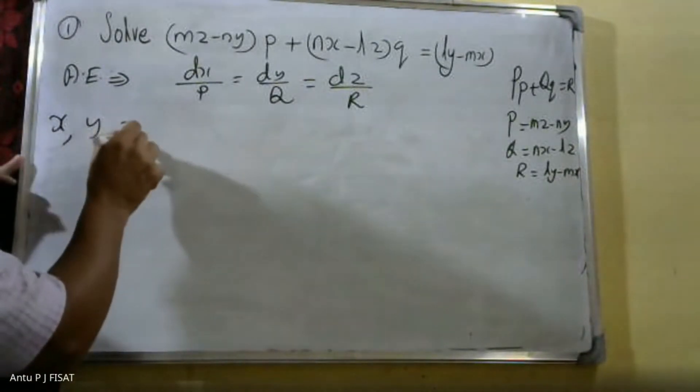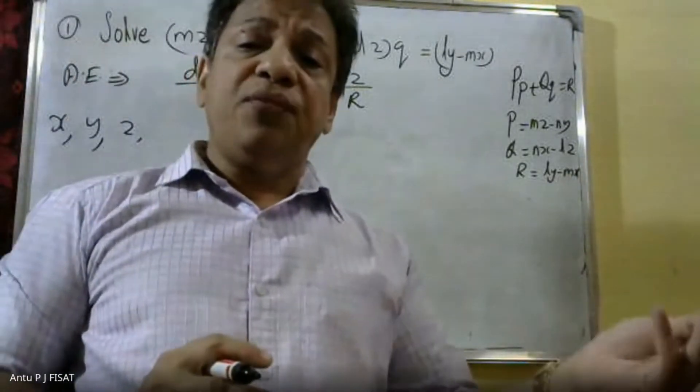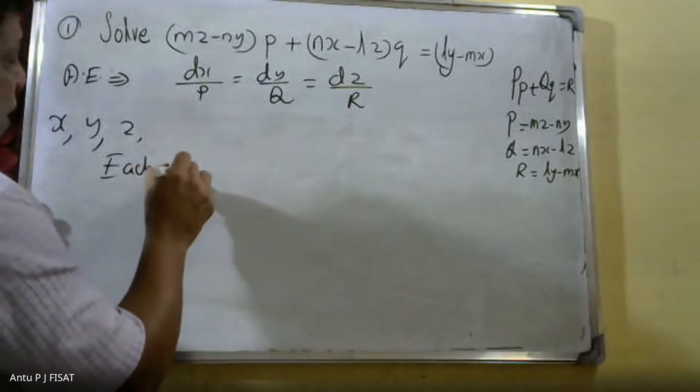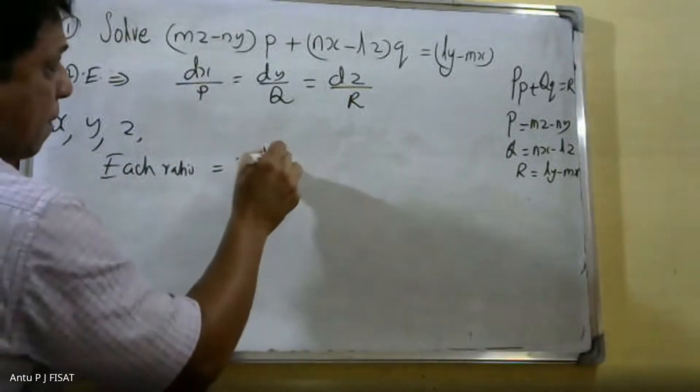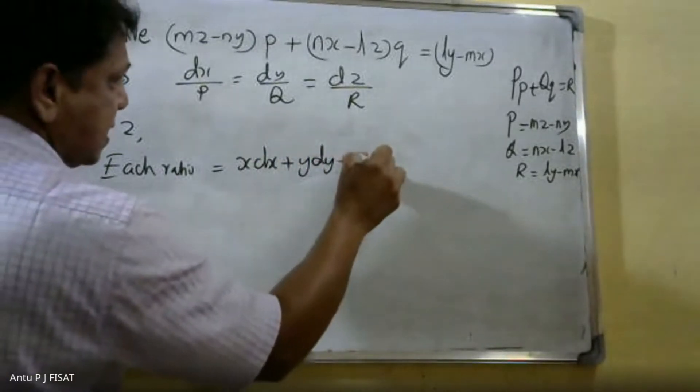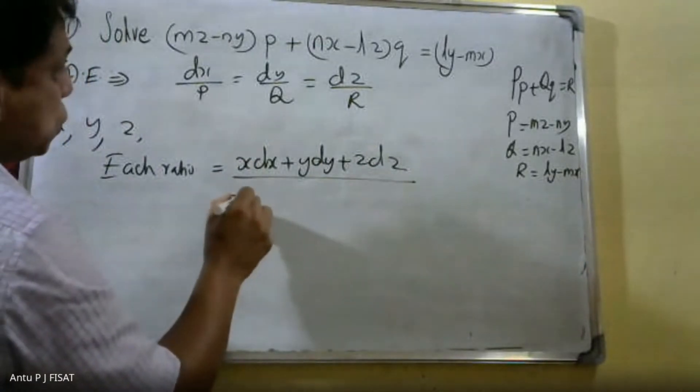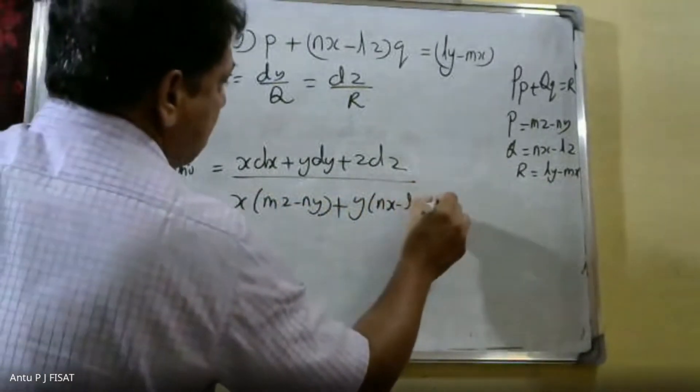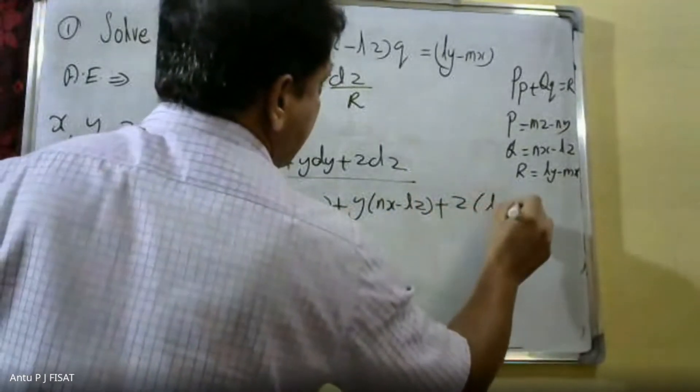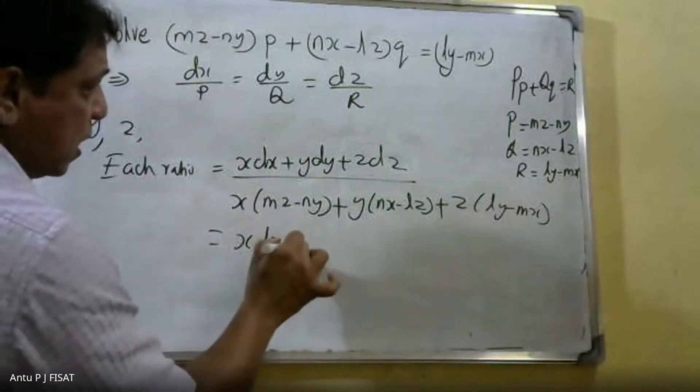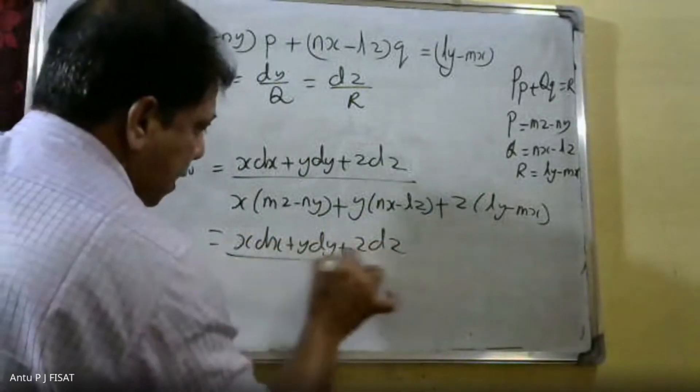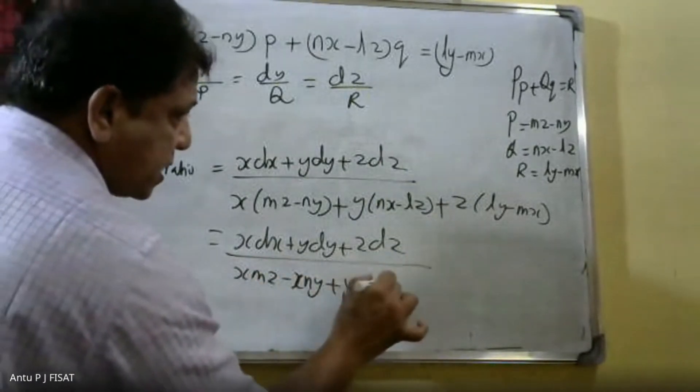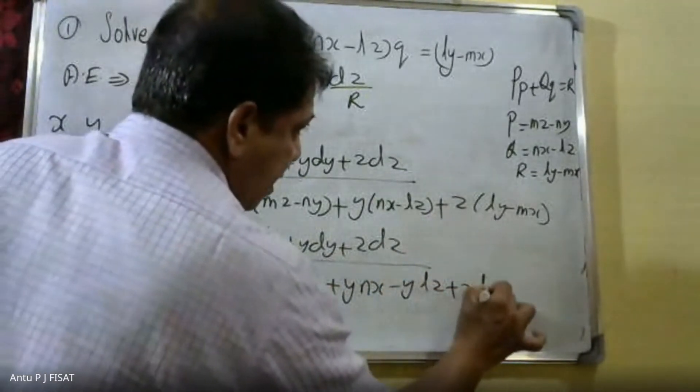For x, y, z, we write xdx + ydy + zdz in the numerator. The denominator is x(mz - ny) + y(nx - lz) + z(ly - mx). Simplifying, these terms cancel.